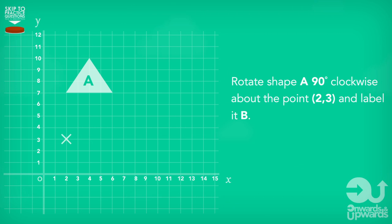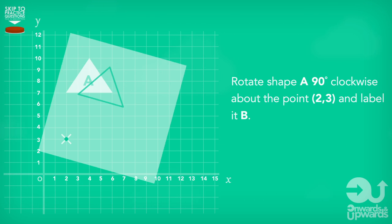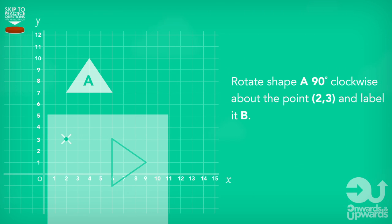With the tracing paper, cover the shape and copy it onto the tracing paper with your pencil. Press down the tracing paper where the point is with your pencil. Then rotate the tracing paper 90 degrees clockwise, and wherever the shape lands, mark out the corners one by one until the shape can be redrawn on the actual sheet of paper. Remove the tracing paper, draw the actual shape, and you're done.